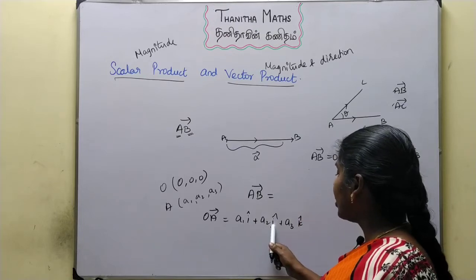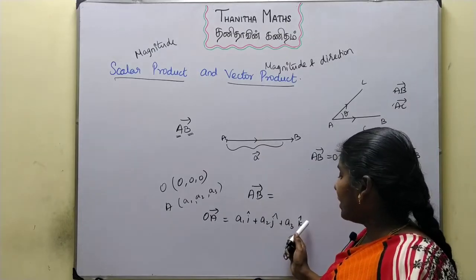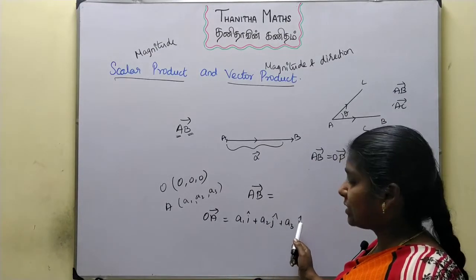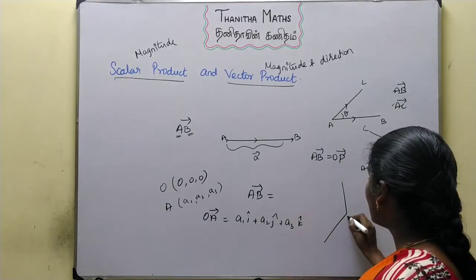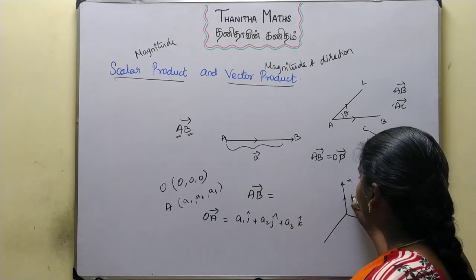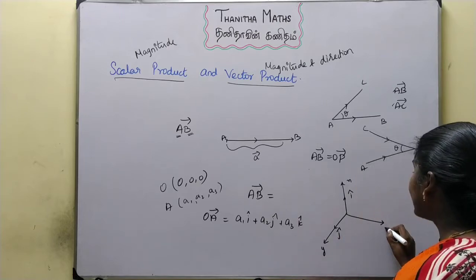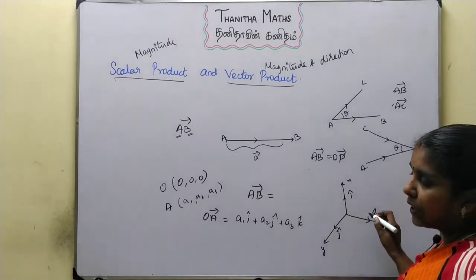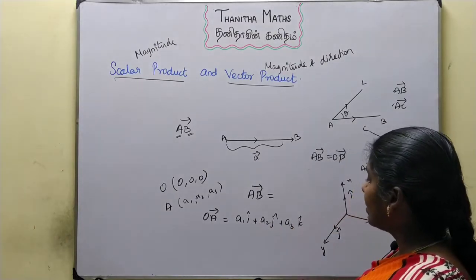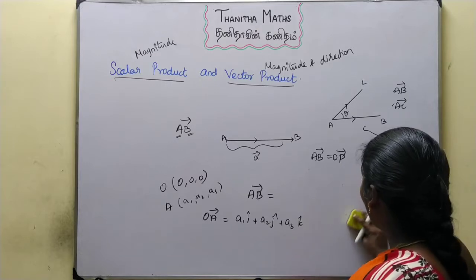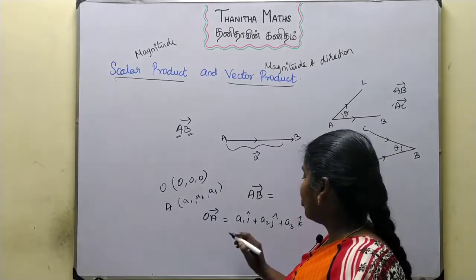Here i-cap, j-cap, k-cap are unit vectors along the x-axis, y-axis, and z-axis respectively in three-dimensional space. So OA vector equals a1·i-cap plus a2·j-cap plus a3·k-cap, and OB vector equals b1·i-cap plus b2·j-cap plus b3·k-cap. These unit vectors i, j, k represent direction.